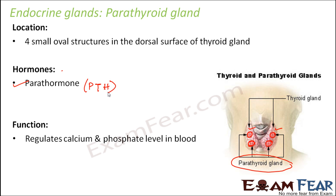In the case of thyrocalcitonin we also saw that it regulates calcium and phosphate levels. Parathormone does the opposite — thyrocalcitonin decreases the level when calcium and phosphate are too high, whereas parathormone increases their level when it becomes too low.